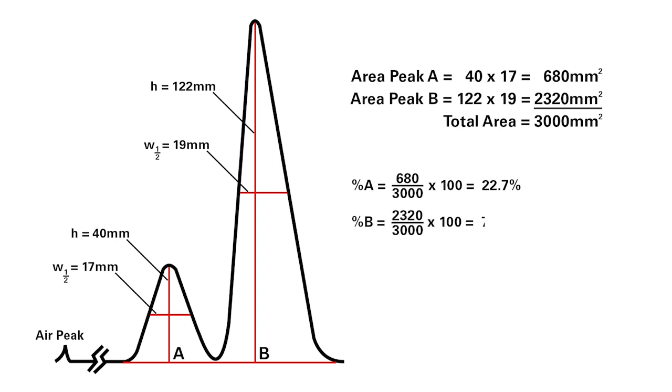The percentage of compound B in the mixture is 2,320 divided by 3,000 times 100%, which comes out to 77.3%.